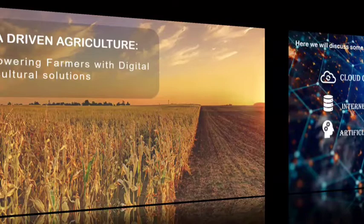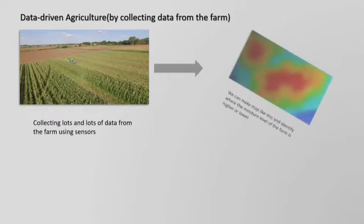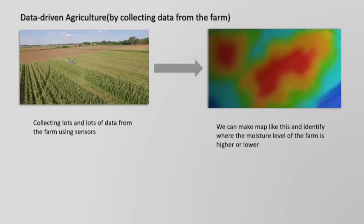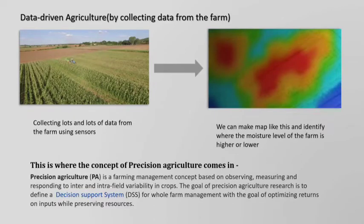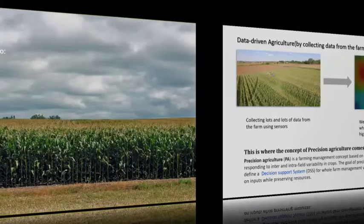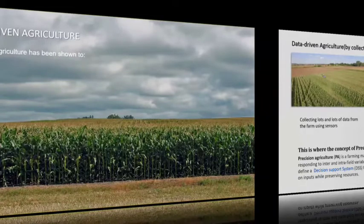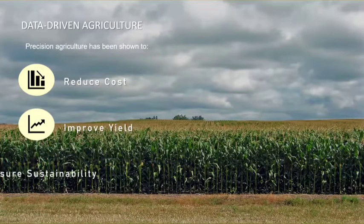What is data-driven agriculture? Data-driven agriculture is collecting lots of data from farms using sensors. We can then make a map to identify the moisture level or pH level of the farm — where it is higher or lower. This brings in the concept of precision agriculture, meaning we use essential things like pesticides and water only in the spaces of the farm where they are actually needed. Precision agriculture has been shown to reduce costs by using pesticides more precisely, improve yields, and ensure sustainability.